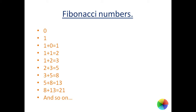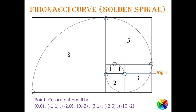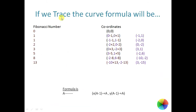This is known as the golden spiral or Fibonacci curve. If we keep the origin here, by basic geometry we can get the coordinates of points as: (0, 0), (-1, 1), (-2, 0), (-3, 1), (-2, 6), and (-2+8, 10) which is (10, -2). By considering this as the origin, we get particular points.